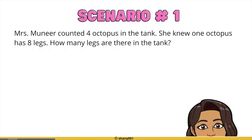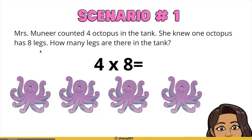Here is a scenario. Mrs. Muneer counted four octopus in the tank. She knew one octopus has eight legs. How many legs are there in the tank? So we have four octopus in the tank and each one has eight legs. Let's go ahead and draw this out. I have my four octopus, each one has eight legs.